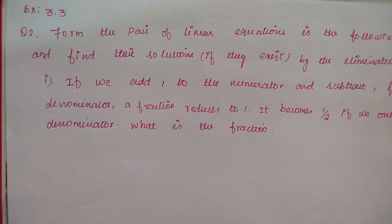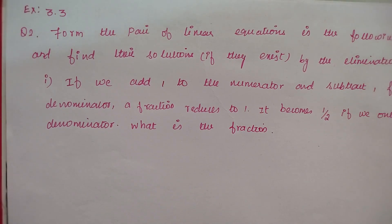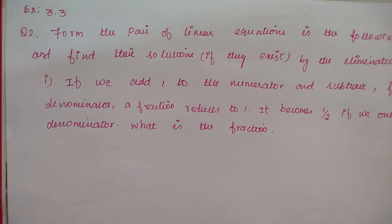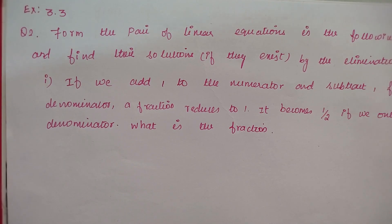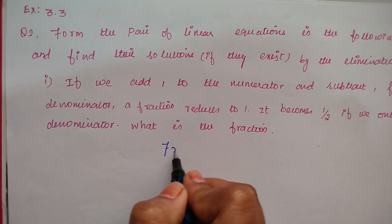First part: if we add 1 to the numerator and subtract 1 from the denominator, a fraction reduces to 1. For a fraction, there is a numerator and a denominator. It becomes 1 by 2 if we only add 1 to the denominator. So, what is the fraction? The fraction is x by y.